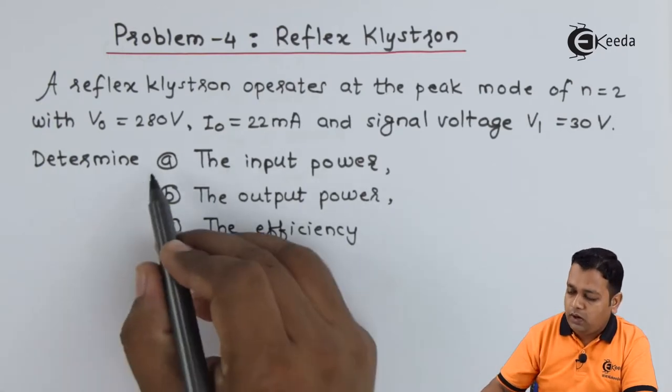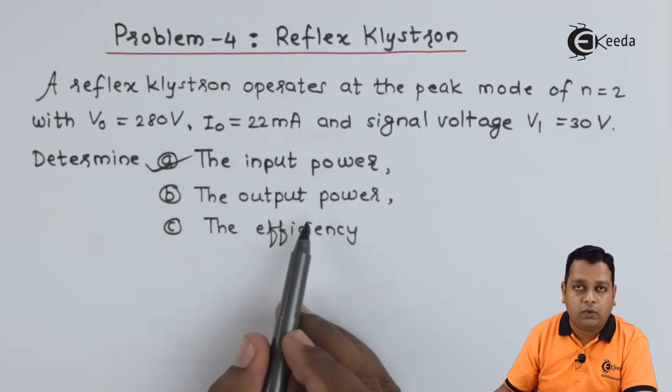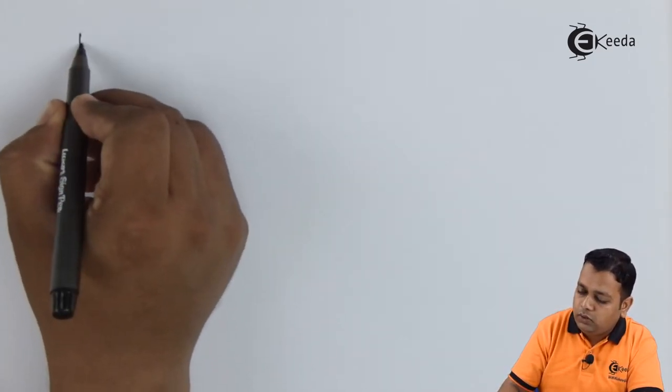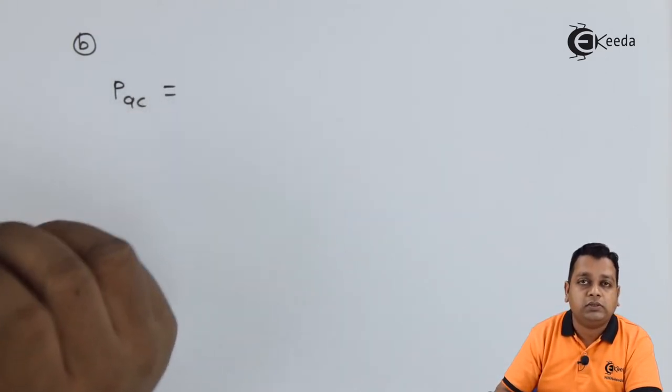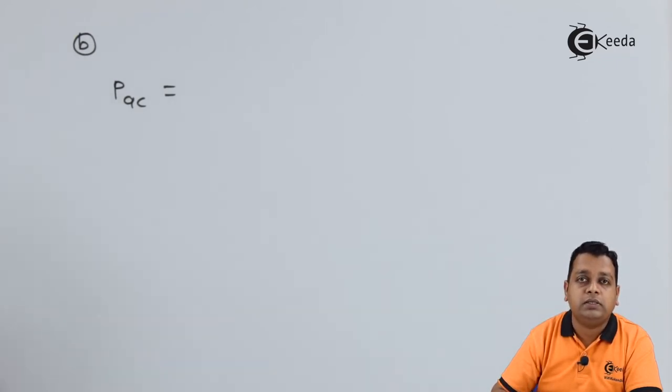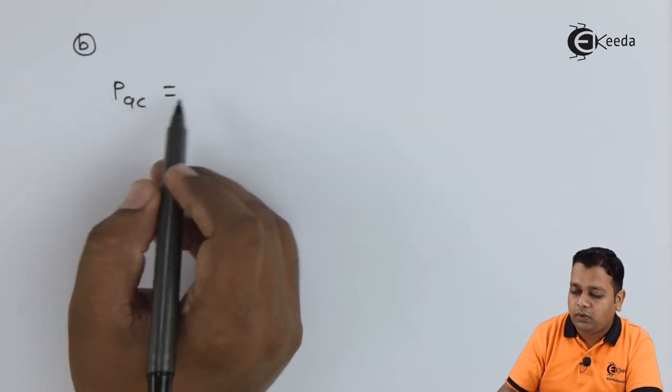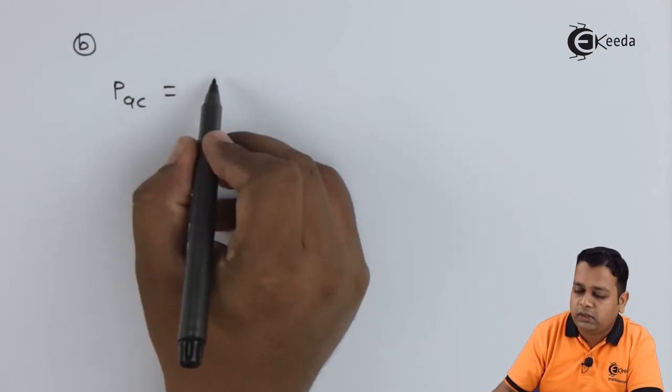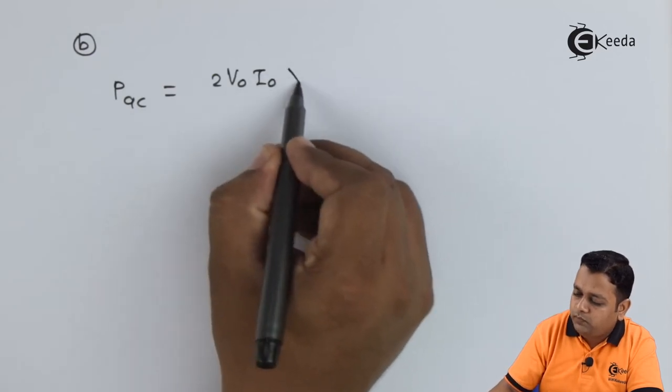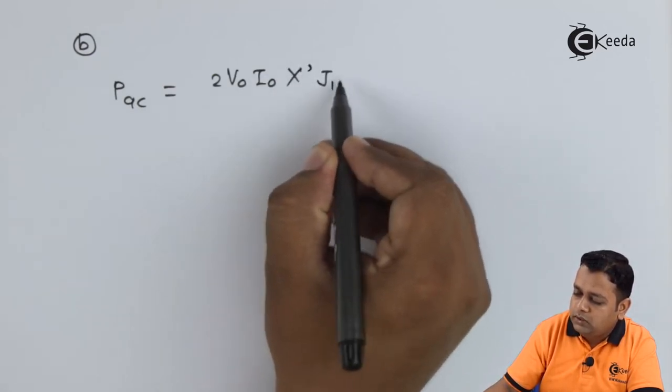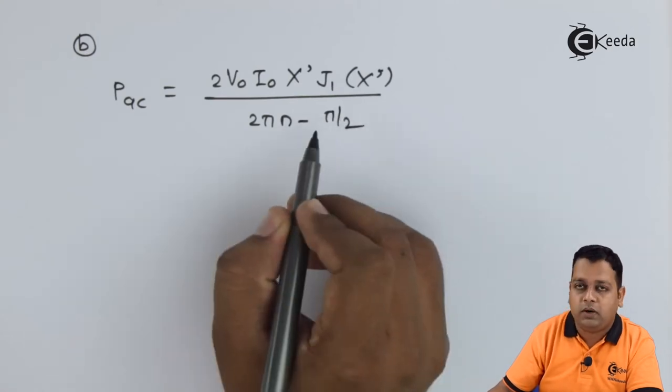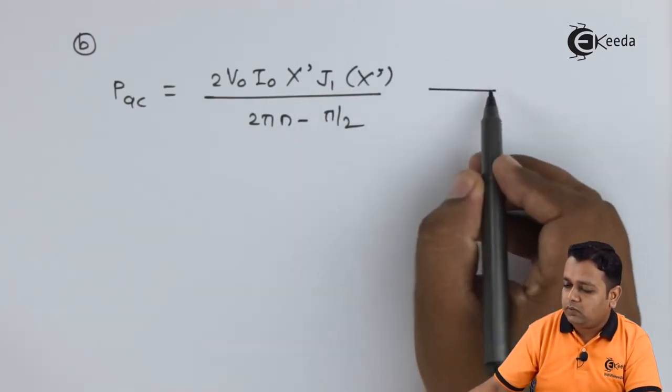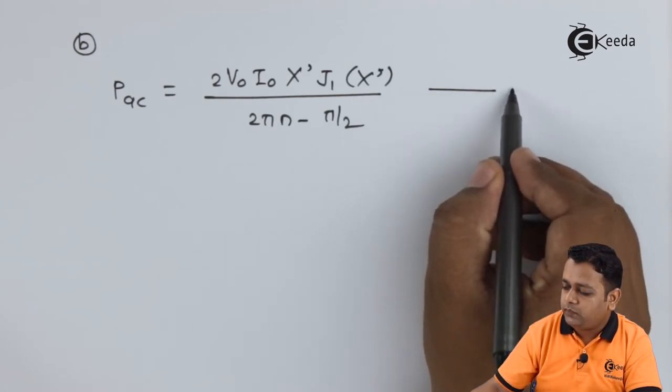Now after determination of input power in part a we go for calculation of output power. Now for calculation of output power we denote output power by P_ac because the reflex klystron is working as oscillator. So provided the DC inputs to it it will produce the oscillating microwave. So for that we have AC type of power. So it is as per the formula we have seen: twice V0 I0 X' into J1 of X' divided by 2πn minus π by 2. So we name this equation. Let us say this is equation number one.